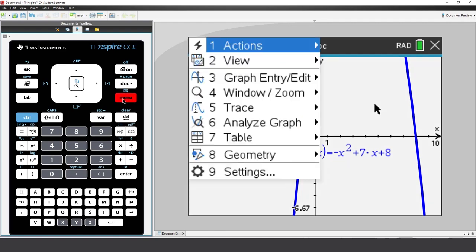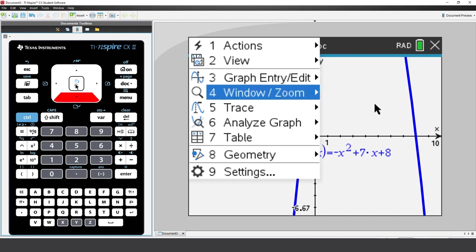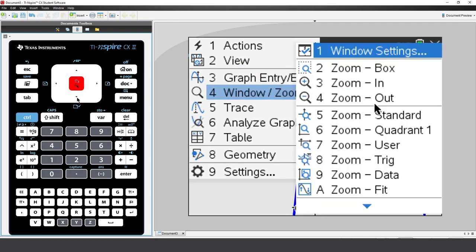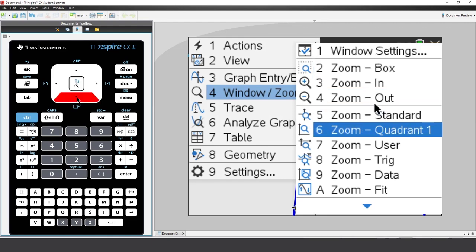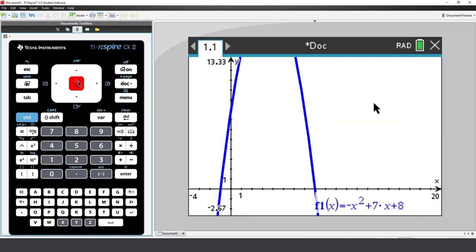Press the menu key, select Windows Zoom, and you'll see that this menu has several options that just might work. Given that most of the key features of the graph are in the first quadrant, I'll select this option. I still can't see the turning point, and now most of my graph occupies the left of the screen.